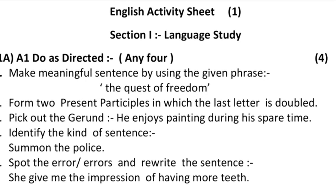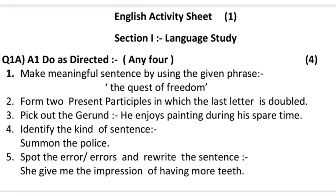As you can see on the screen, this is English activity sheet 1. In a similar manner there will be 5 sheets of this same content. Section 1 always includes language study, which is nothing but grammar. The first question is question number 1A, A1 — 'do as directed' — any 4, meaning you have to solve any 4 out of the 5 questions and you will score 4 marks. Now let us read them out one by one and I will give you the answer.